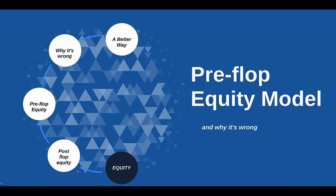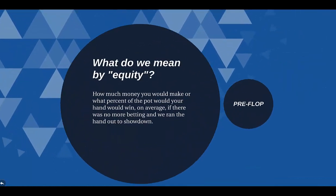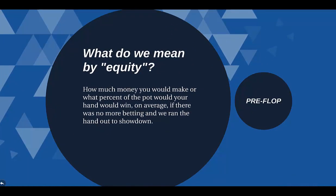Before we get into all that, I think we should probably just define explicitly what we mean when we say equity. You could say: what's the percent of the pot that you would expect your hand to capture on average if there were no more folding in the hand? If this hand is guaranteed to go to showdown, what percent of the pot does it win on average by getting to showdown and making or being the best hand?